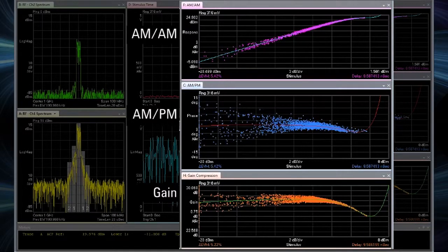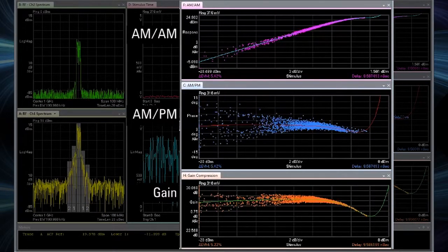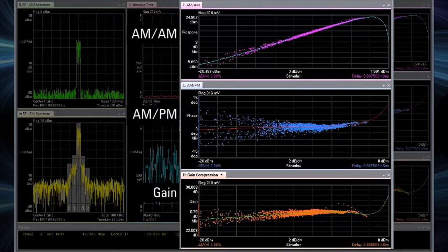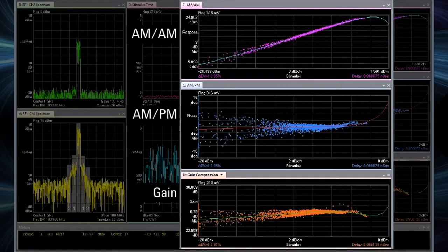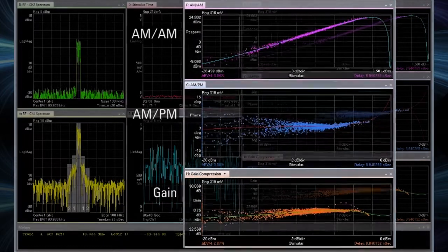Now let's turn on envelope tracking and take a look at the impact on the power amplifier performance. With the shaping table we've used on the envelope signal, we can see that we've been able to decrease the ACPR and linearize the gain of the power amplifier.